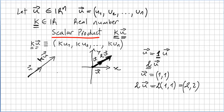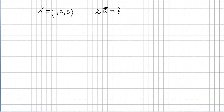And if this is vector u, this is vector minus u. So the minus sign changes the direction of the vector.